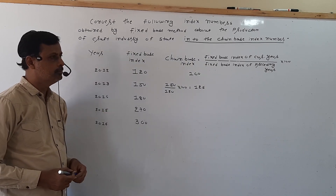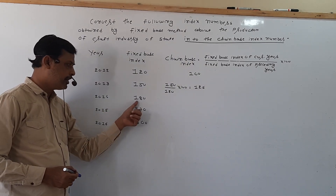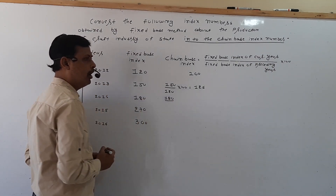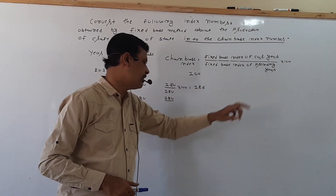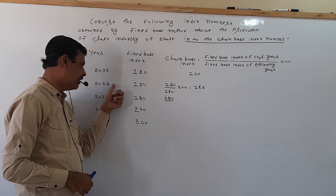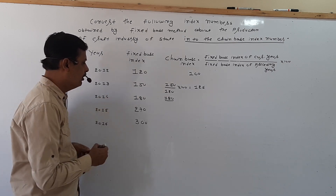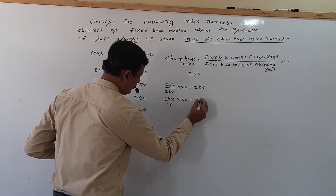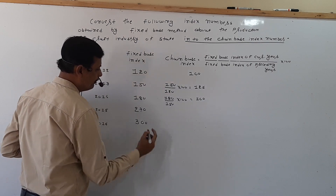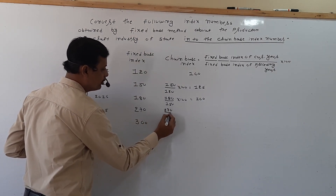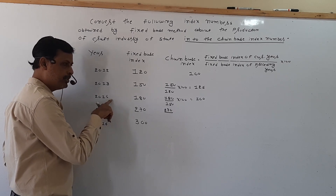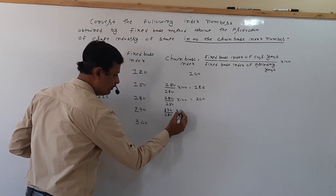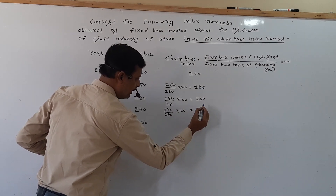In 2014, the fixed base index of the current year is 180, upon the fixed base index of the preceding year — 2014 preceding is 2013 — that is 150. In 2015, the current year fixed base index is 170, and 2015 preceding is 2014, fixed base is 180, into 100, that is 94.44.